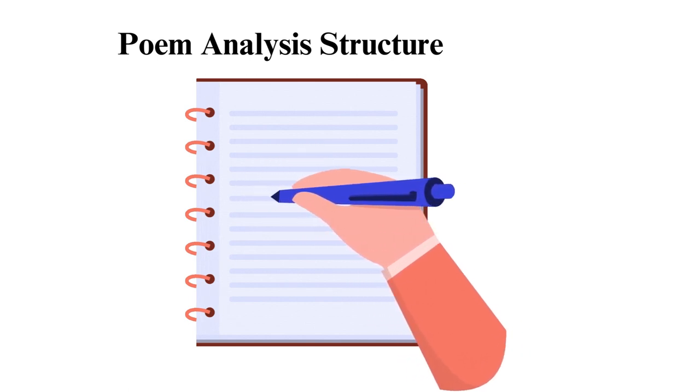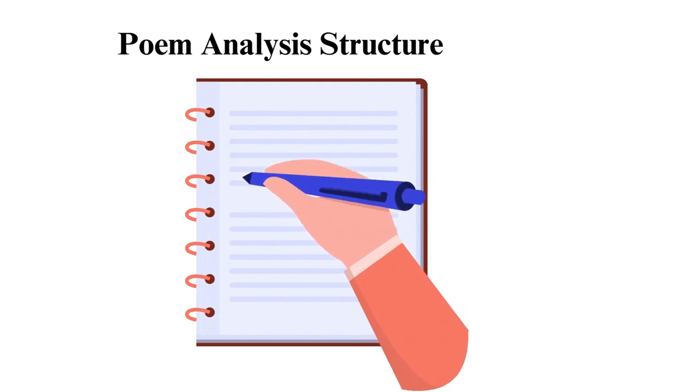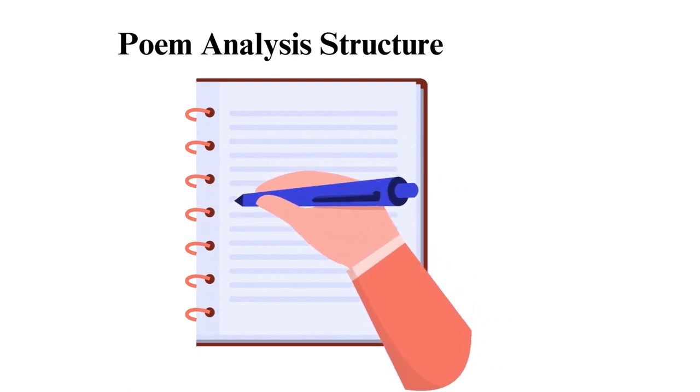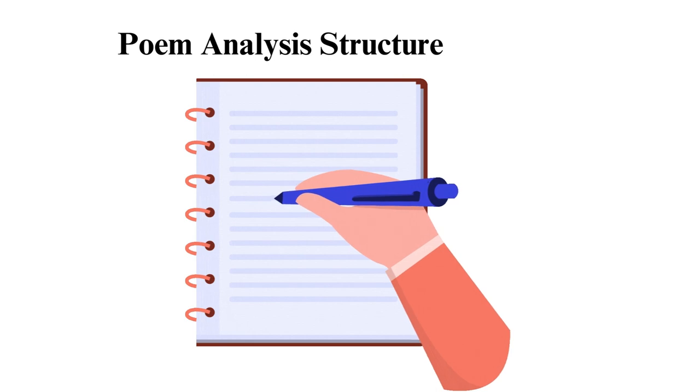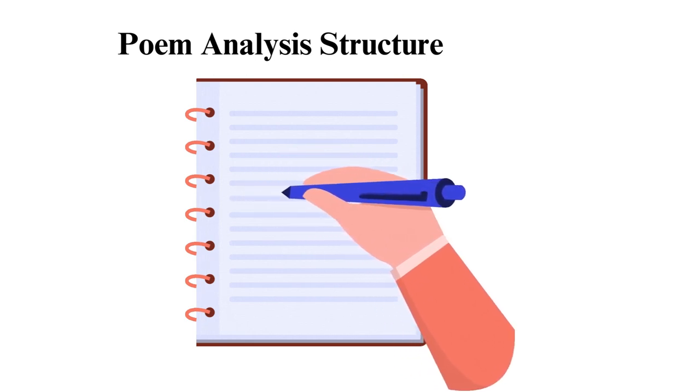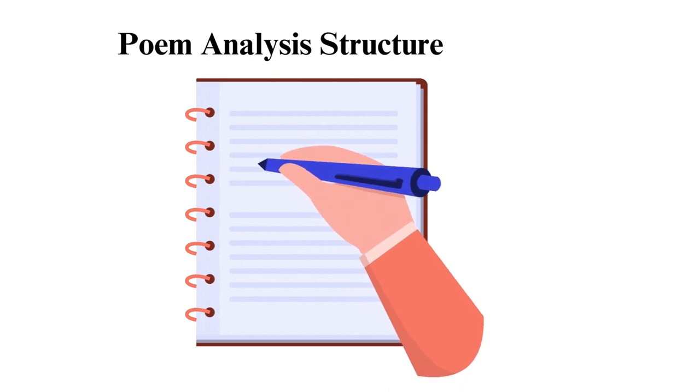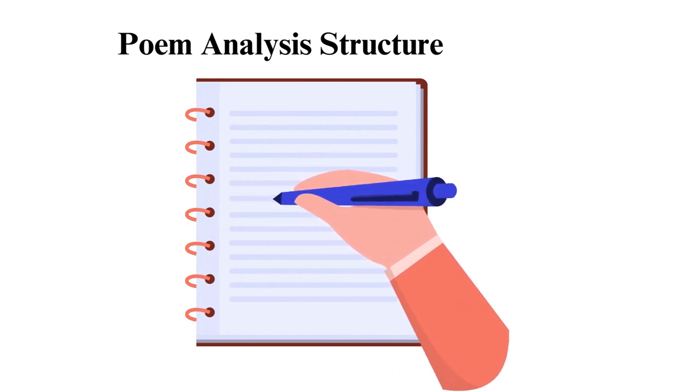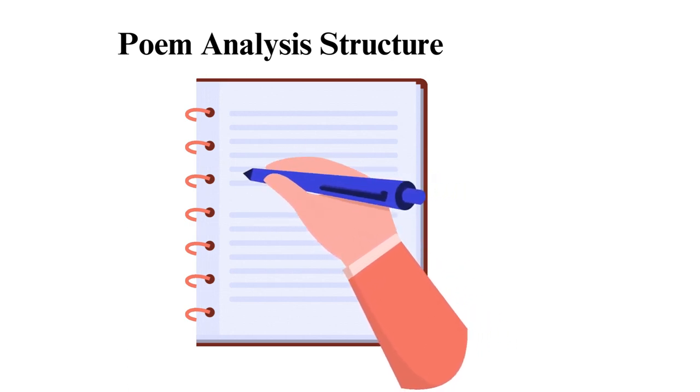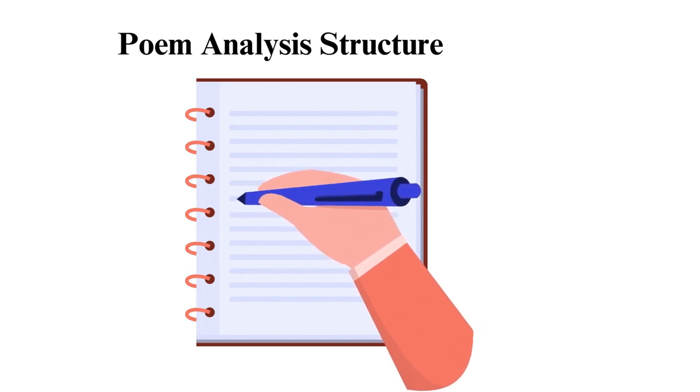2. Body. This is the main body of the text and includes a detailed explanation of your points. It can be either a poetry paragraph or several, depending on the word count required. It is in this section that you present the narrator, mood, tone, theme, use of poetic devices, and figures of speech.